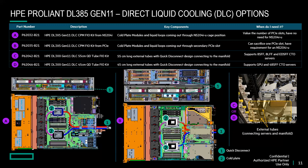Liquid cooling — as opposed to traditional air cooling — is now available for some Gen 11 servers. It provides better overall cooling for the increased heat generated by higher CPU voltage requirements. HPE offers closed-loop liquid cooling (self-contained) as well as direct liquid cooling (continuously fed from a water or liquid source). Closed-loop options are available on the DL325, DL360, and DL560 Gen 11 and involve a special fan and heat sink. Direct liquid cooling is available for the DL360, DL365, DL380, and DL385 Gen 11 servers.